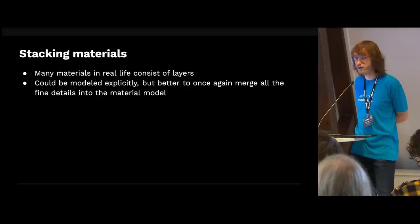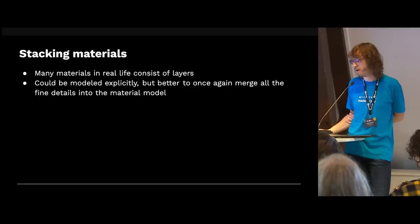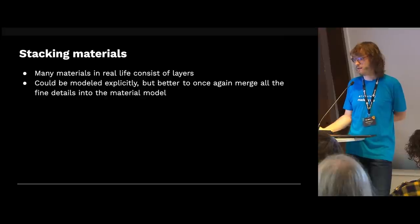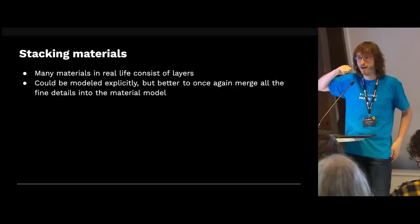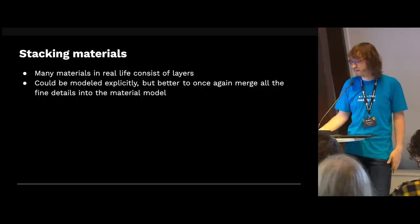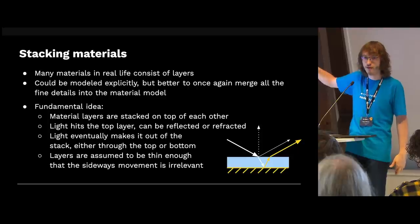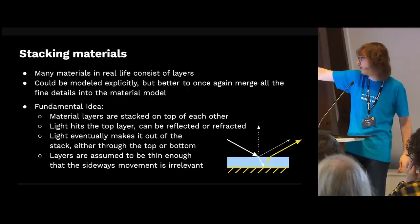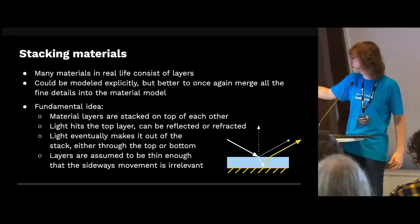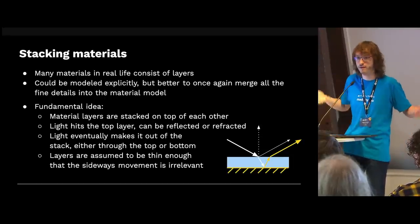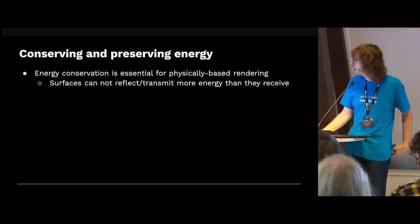Sometimes we want to combine layers — for example, the classic glossy-on-diffuse setup. That's a classic example of layered materials. You could explicitly render three objects stacked on top of each other, but the noise would be crazy. So we bake this into the material model. We assume layers are stacked on top of each other, light comes from the top, something reflects off the top, something goes into the layer, and at some point the light comes out. We assume the layers are thin enough that the difference between incoming and exit point doesn't matter — we treat it as one point.